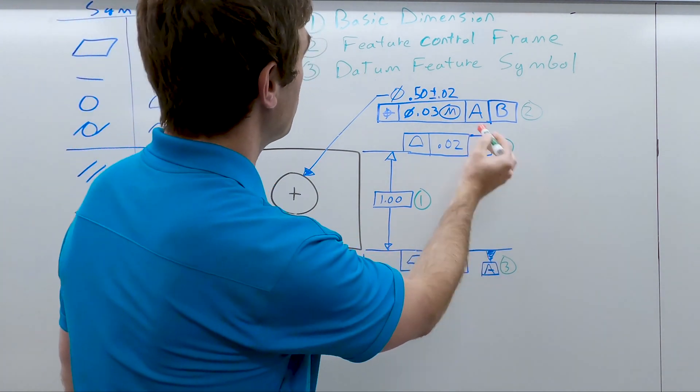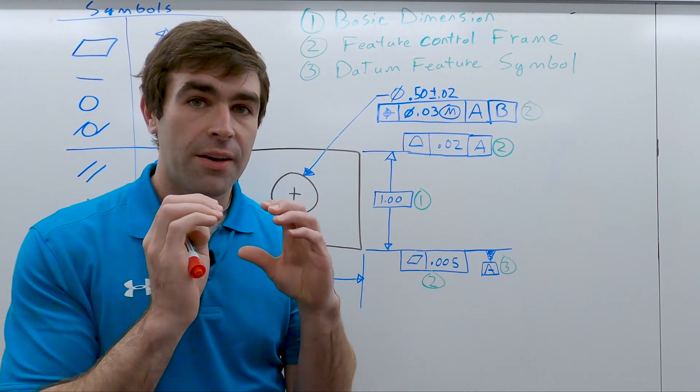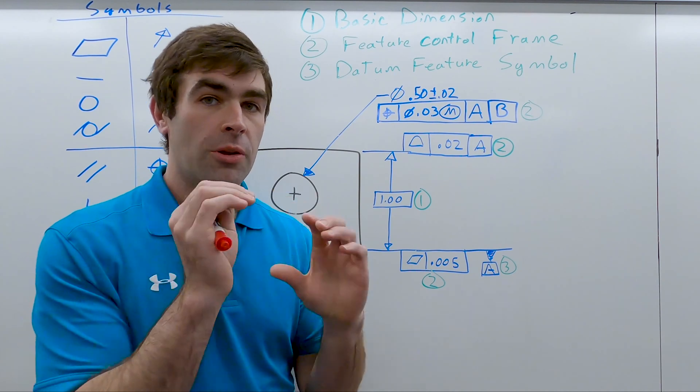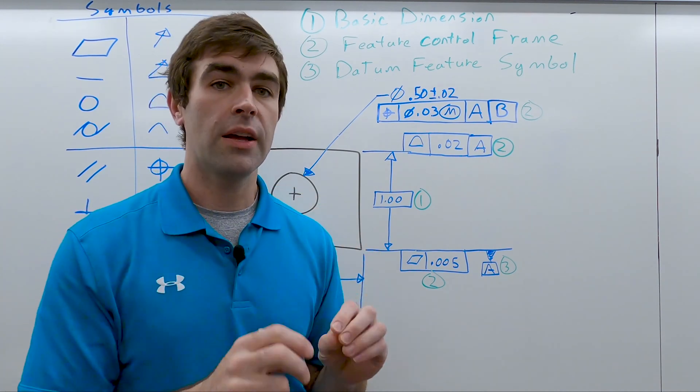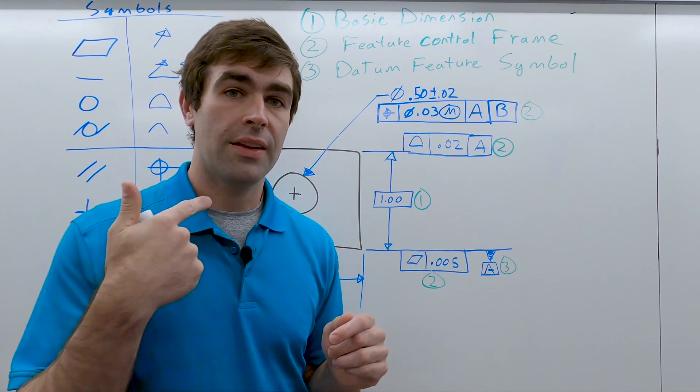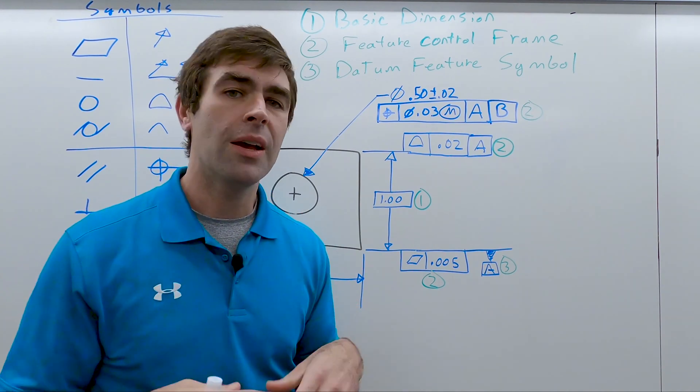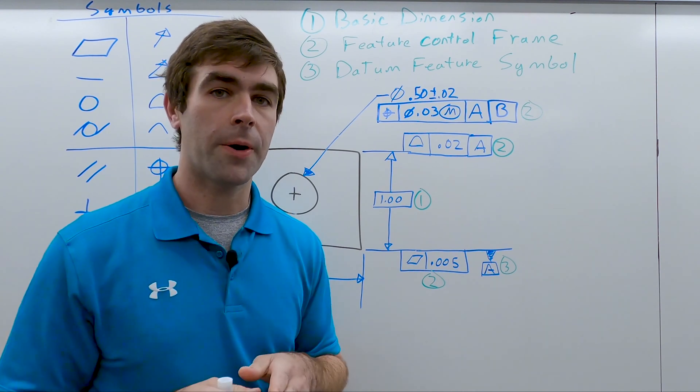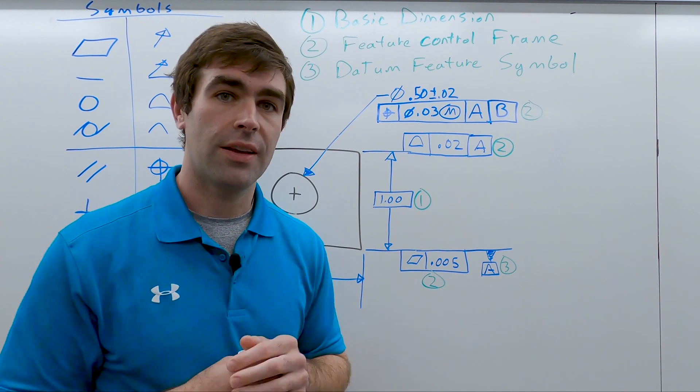The feature control frame holds all the data about our geometric tolerance, tells us everything we need to know to make the part and set up that part for inspection. And by inference, we can kind of figure out what the part is going to be used for or at least how it fits at assembly.